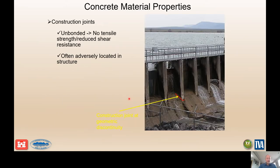Construction joints are an important consideration. Inevitably when looking at failures of these members, the critical location tends to be at the base of a structure at a joint. If that joint is unbonded, the team needs to consider that you may not have any tensile capacity, and it's always at an adversely located position in terms of peak moments and shears.